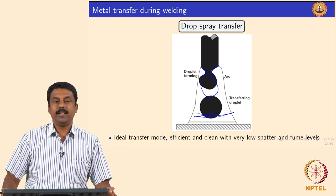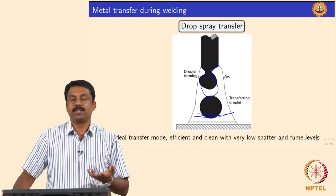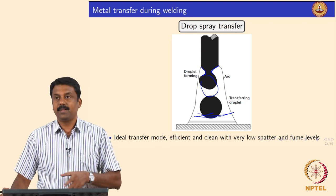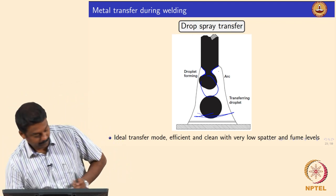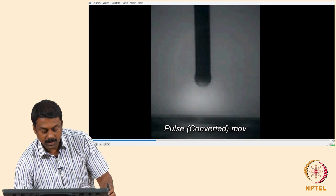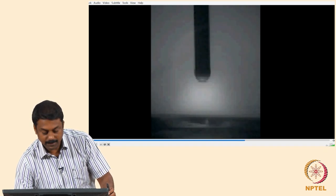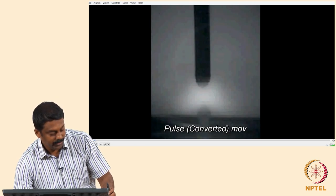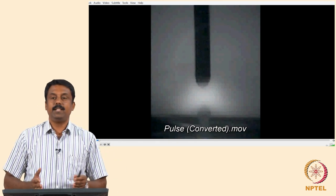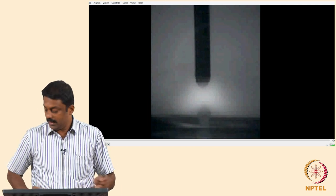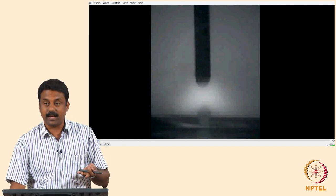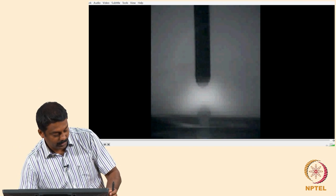In the video recorded with a high-speed camera at 10,000 frames per second, a pulse is applied and with every pulse a droplet is detached. The entire video spans less than a second, yet you can see a number of droplets being transferred. This is the drop spray transfer happening in real life.